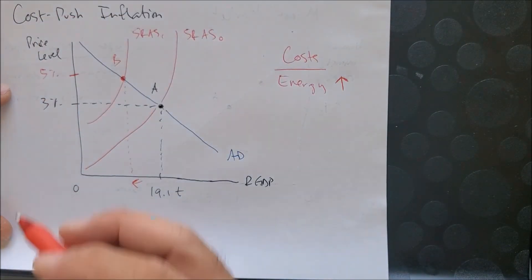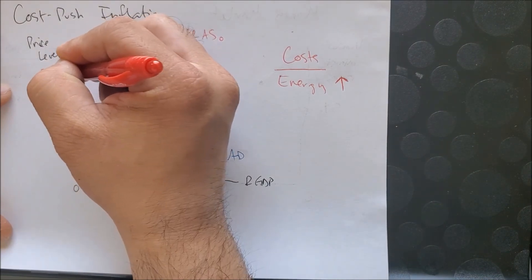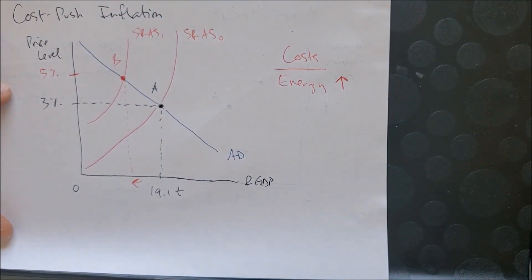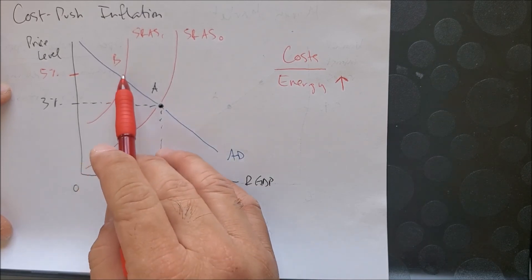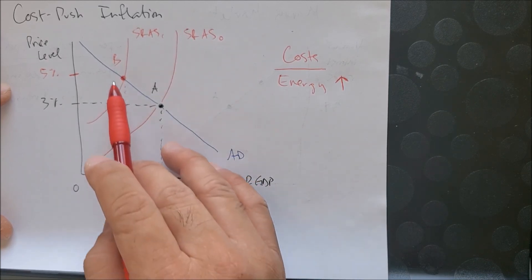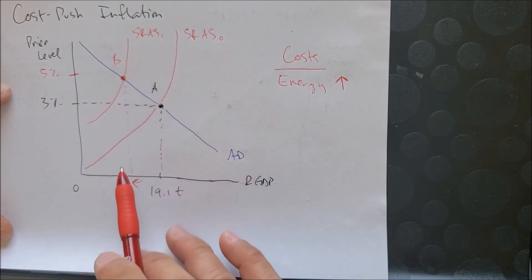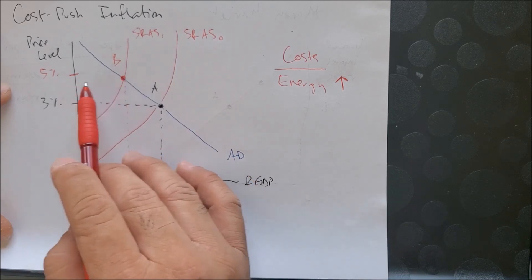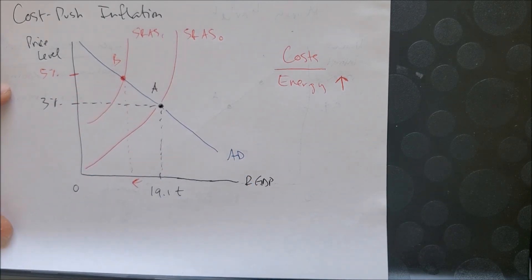In this situation we are at the very worst quadrant we could ever be, quadrant 2, where we have slow growth, which could also mean a higher unemployment rate at point B, and high inflation. In other words, we can call this quadrant stagflation. This is an example of cost push inflation.